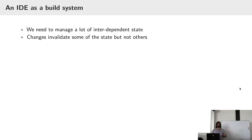These changes invalidate some of the state but not others. How do you keep track of which state is actually up to date and which is not? You use a build system. You also have state updates that are interrupted — we're compiling something, suddenly the user types a character and we cancel everything because the file has been invalidated.